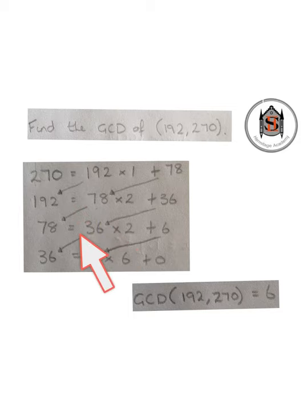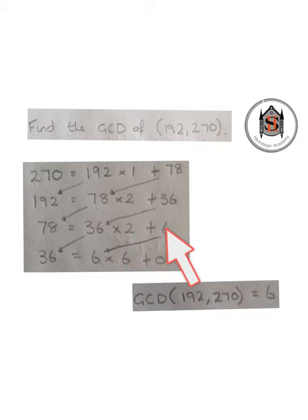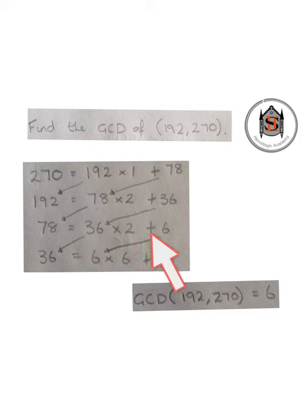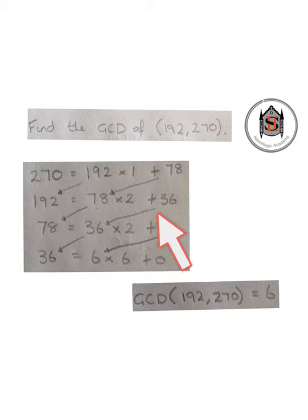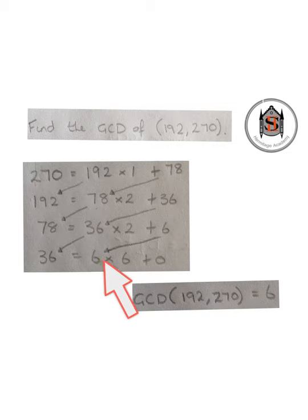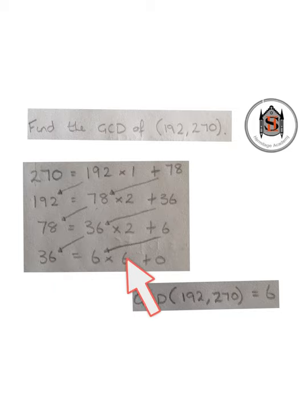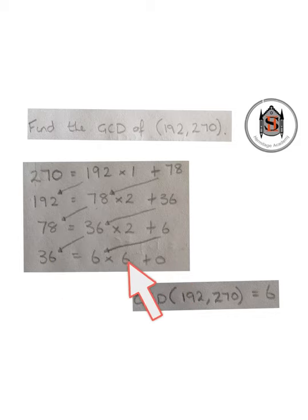We work out how many times 36 goes into 78, which is twice with 6 left over. Then we work out how many times 6 goes into 36, which is 6 times with no remainder. So we can write 36 as 6 times 6 plus 0.